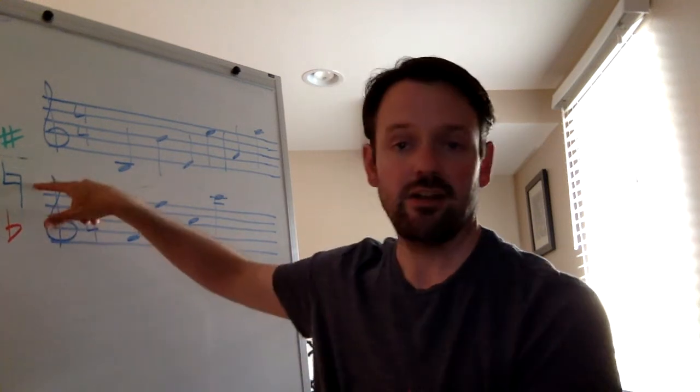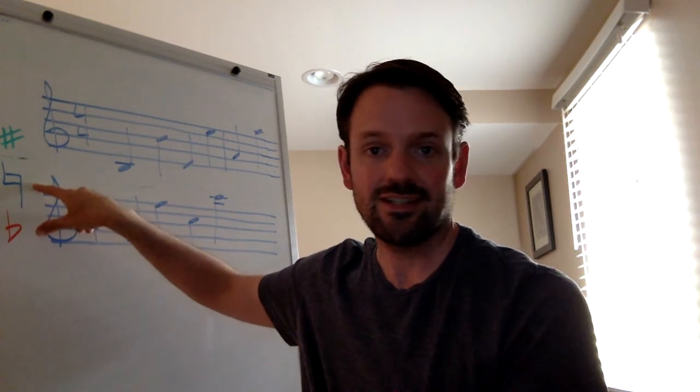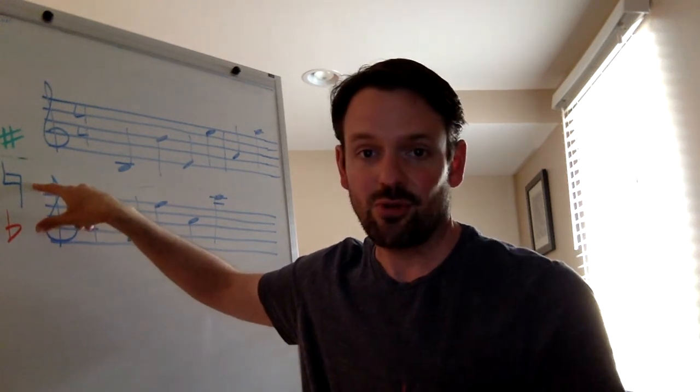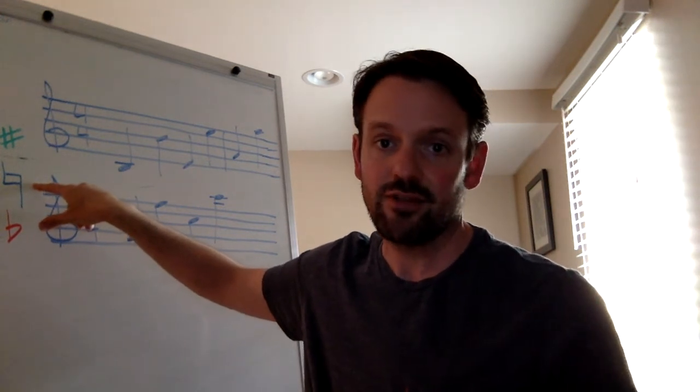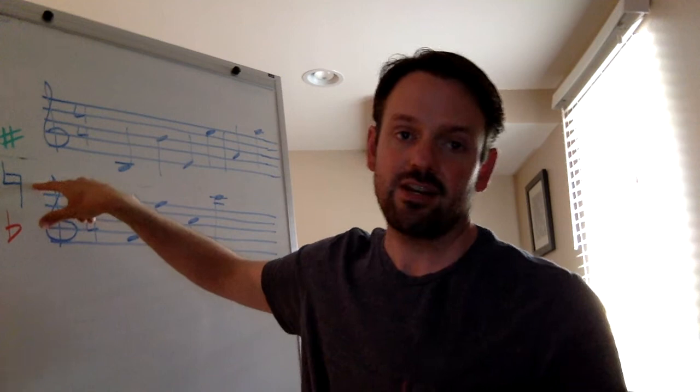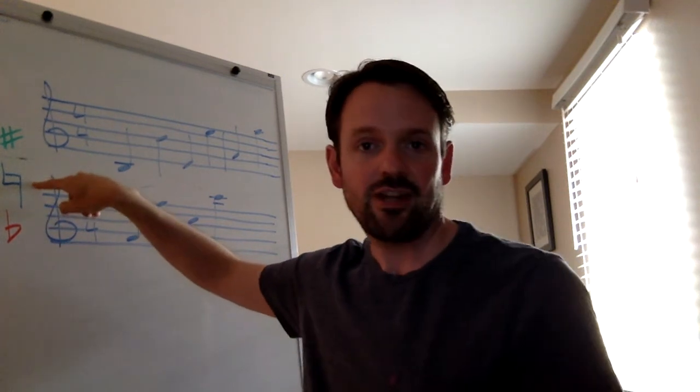Every note comes in three different varieties. You have a natural note, which is the C that you normally play, or the D or the E. That note, its full name is E natural, and if you were to have to mark that it's natural, you would write this symbol, the natural symbol.